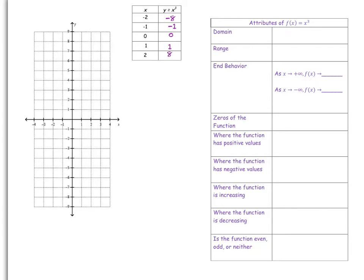And y = 2³ = 8. Now we have ordered pairs we can graph: (−2, −8), (−1, −1), (0, 0), (1, 1), and (2, 8). I typically start in the center to graph — it's a little easier. That's kind of what the parent cubic function looks like.